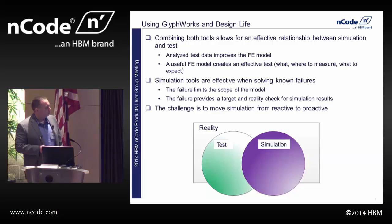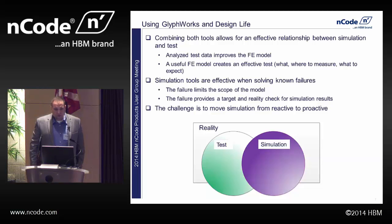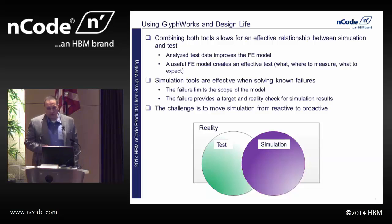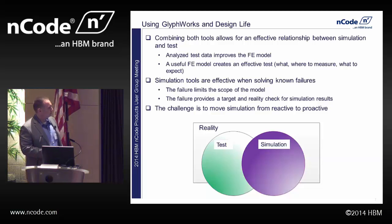Simulation works really well when you have a known failure — when you're operating in this overlap. You have test data, or maybe you have a part that's falling off your machine. That limit tells you how much complexity you need in your model and gives you a target and reality check. If your part has fallen off, you better expect high stress in your FEA results. The challenge is to move away from always being in this overlap and be able to work independently so you're not dependent on test data.